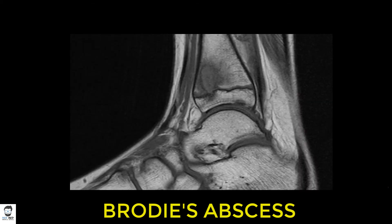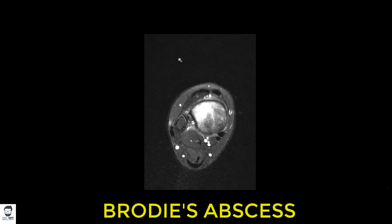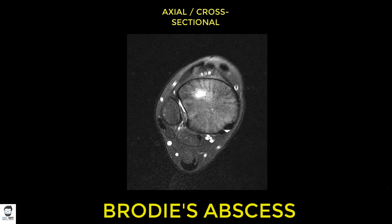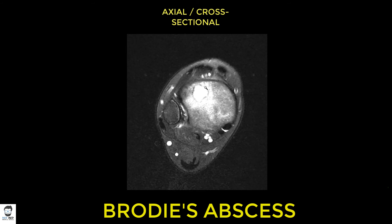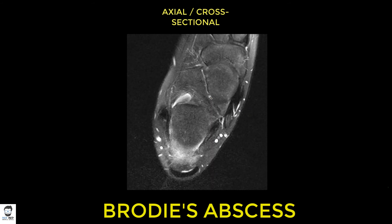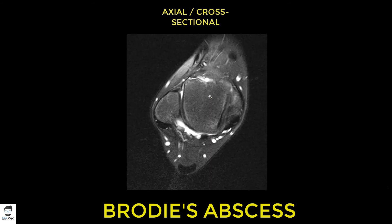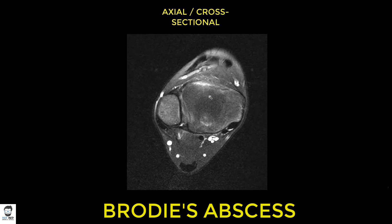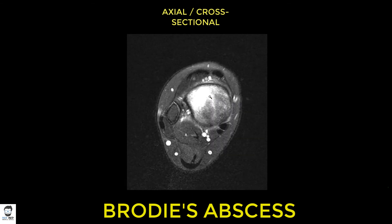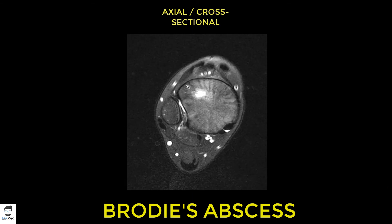Finally, the axial or cross-sectional images show the lesion again as a really well-defined structure with significant periosteal reaction around it. The ankle joint can be seen coming into view. The cortices look very good — there is no breach of the cortices and no major signal intensity changes in the surrounding soft tissues.